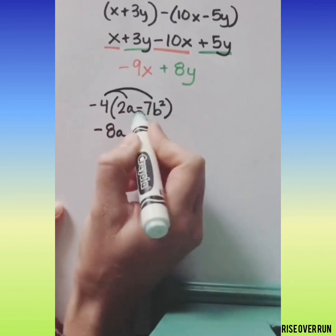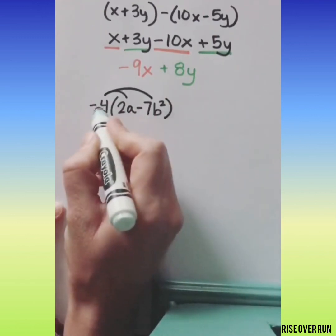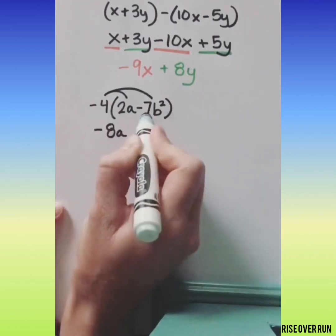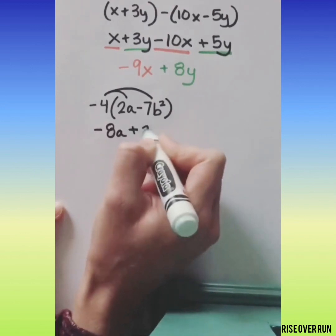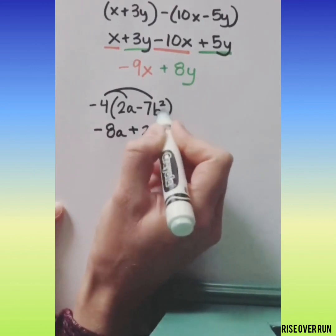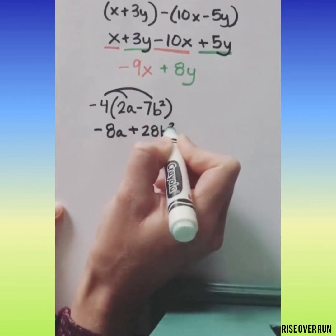Negative 4 times a negative 7b squared. Multiply these big numbers first. That gives us a positive 28 and then we'll keep our variable and exponent.